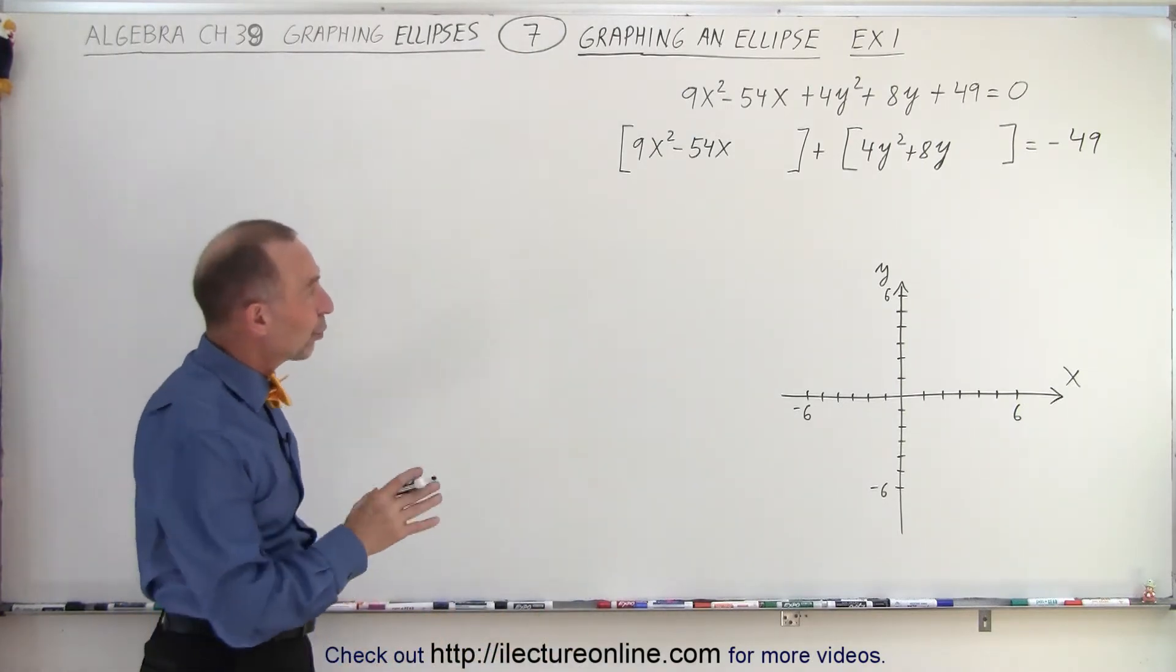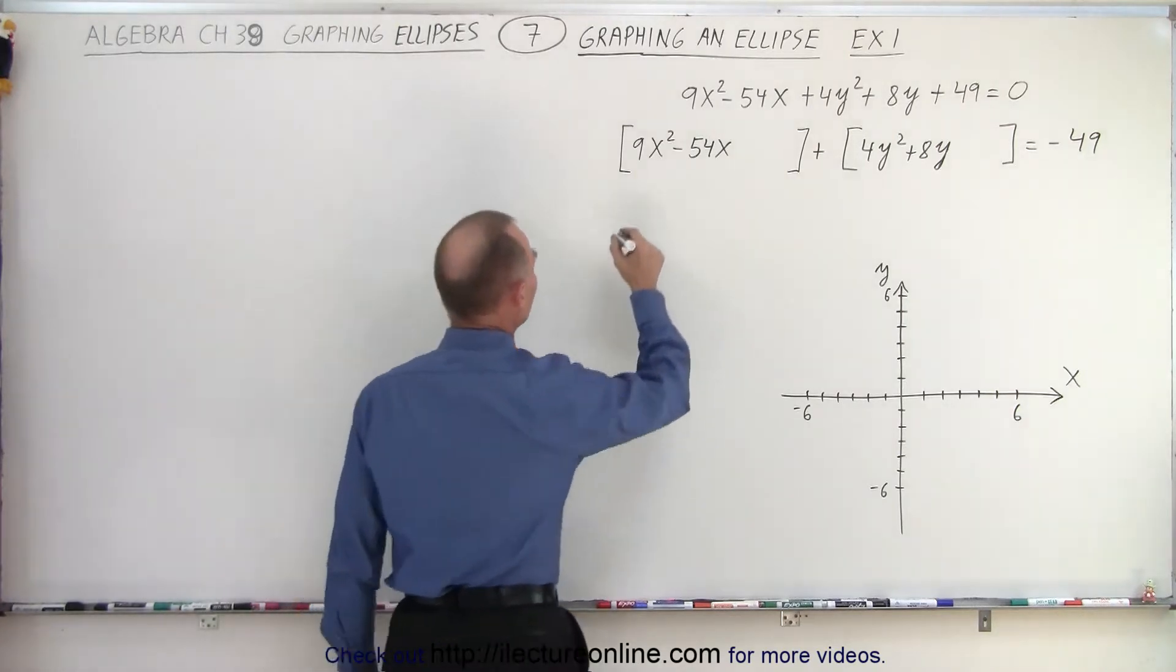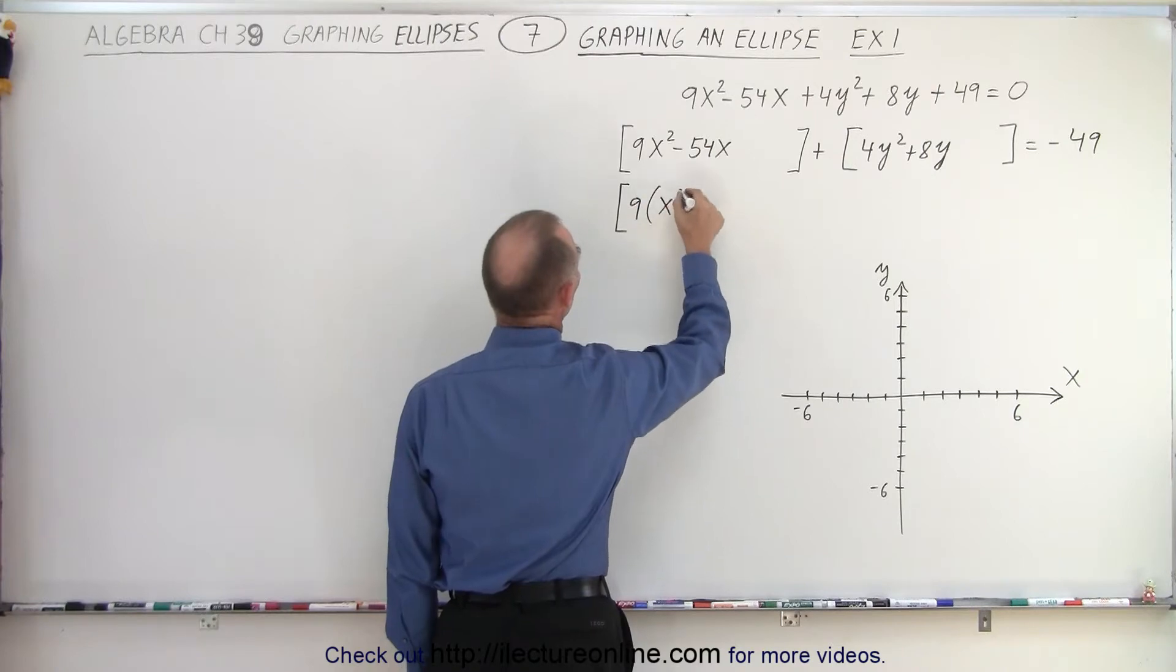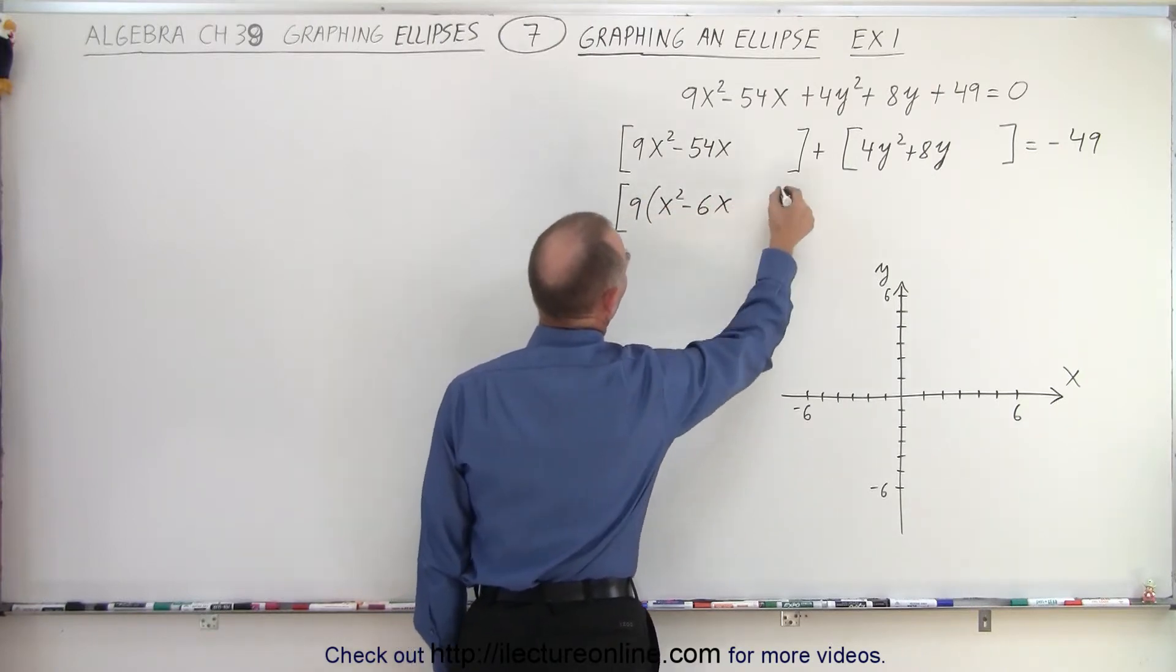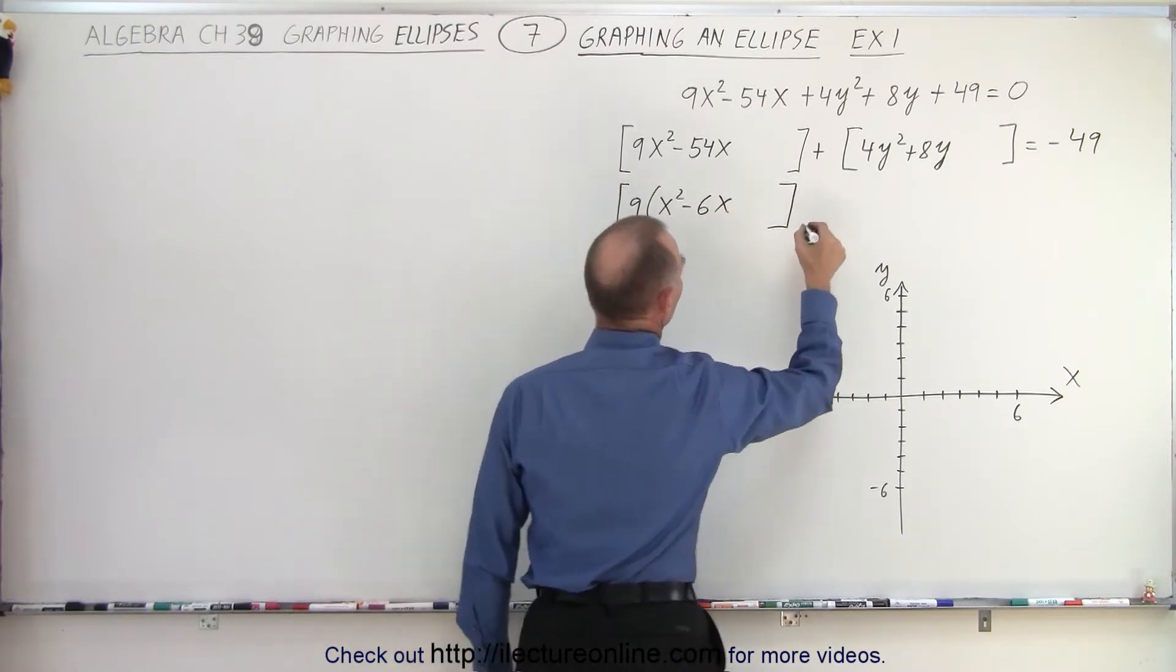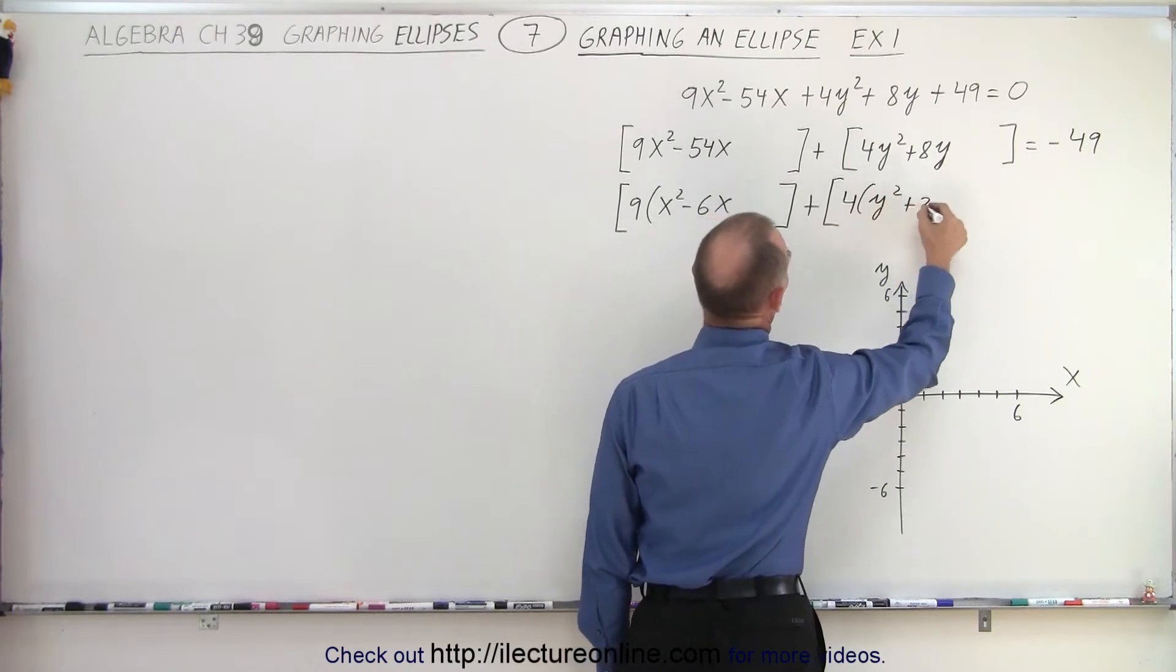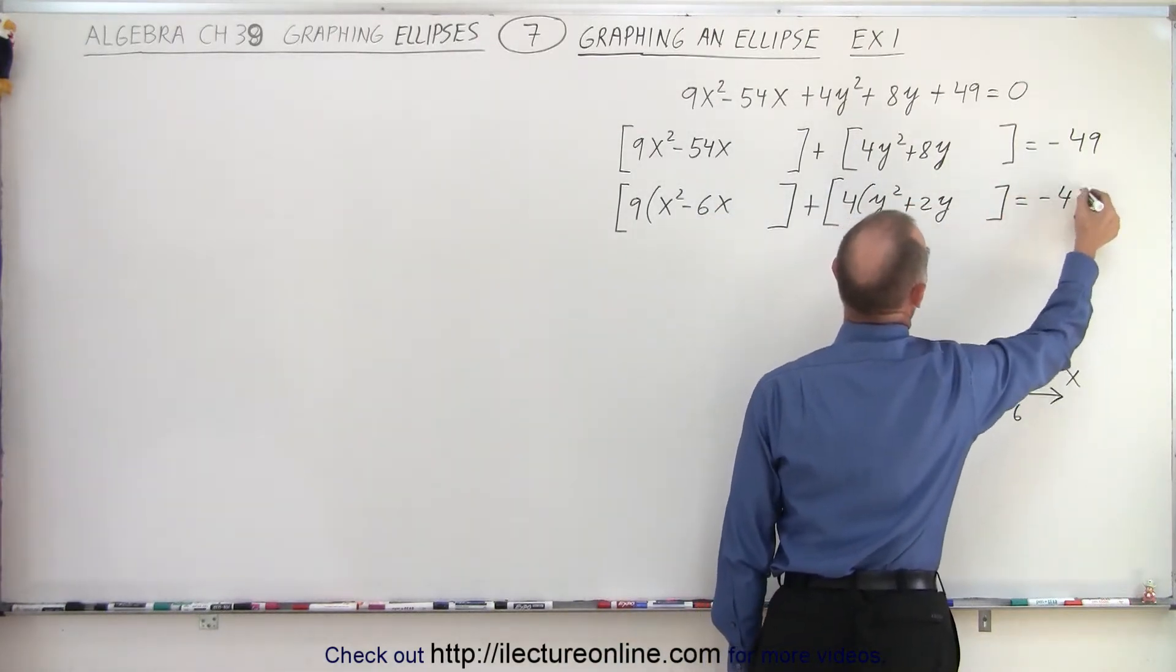Now before we complete the square, we should factor out something if we can. In this case we can write this as 9 times x squared minus 6x, and then leave some space right there. Plus here we can factor out a 4, 4 times y squared plus 2y, and leave some space equals minus 49.